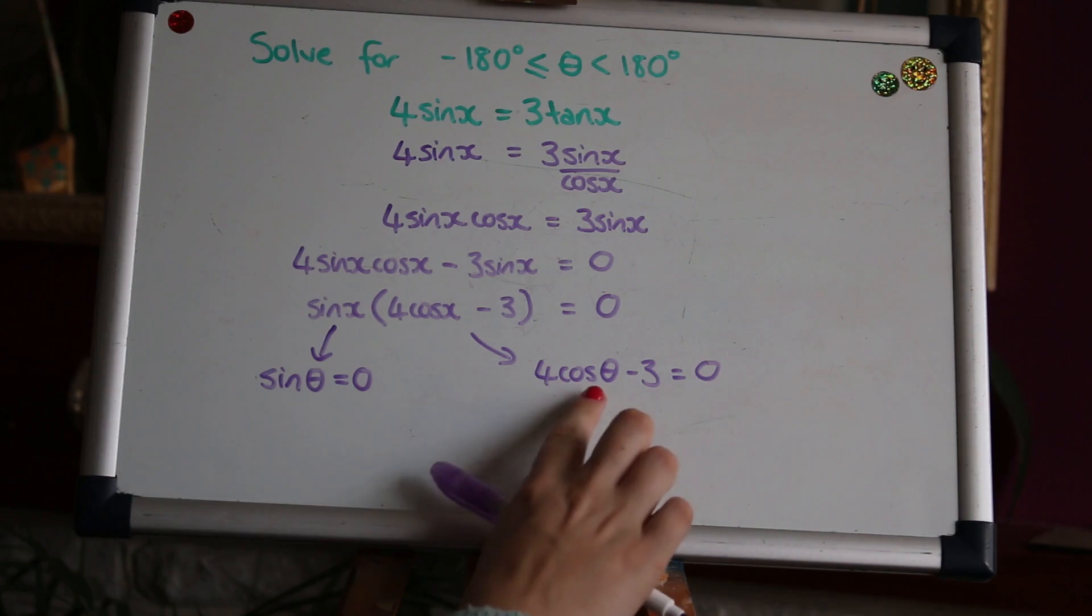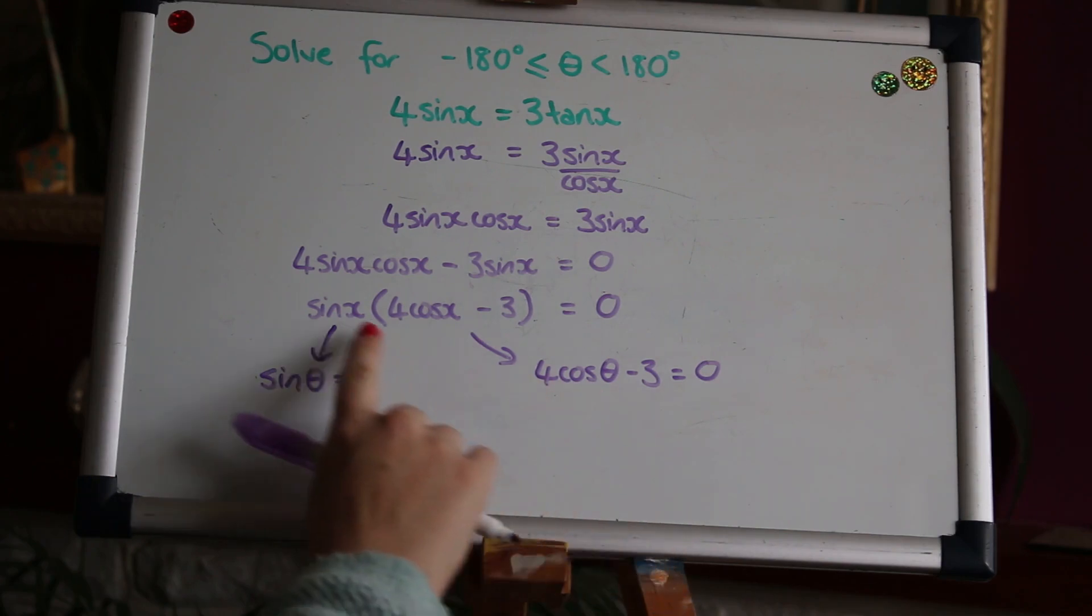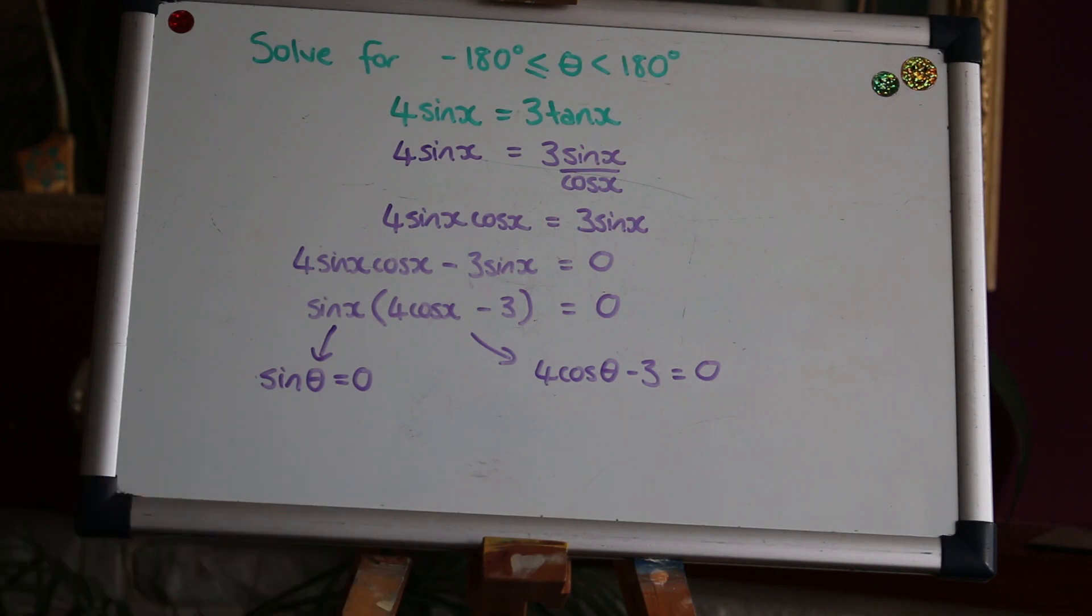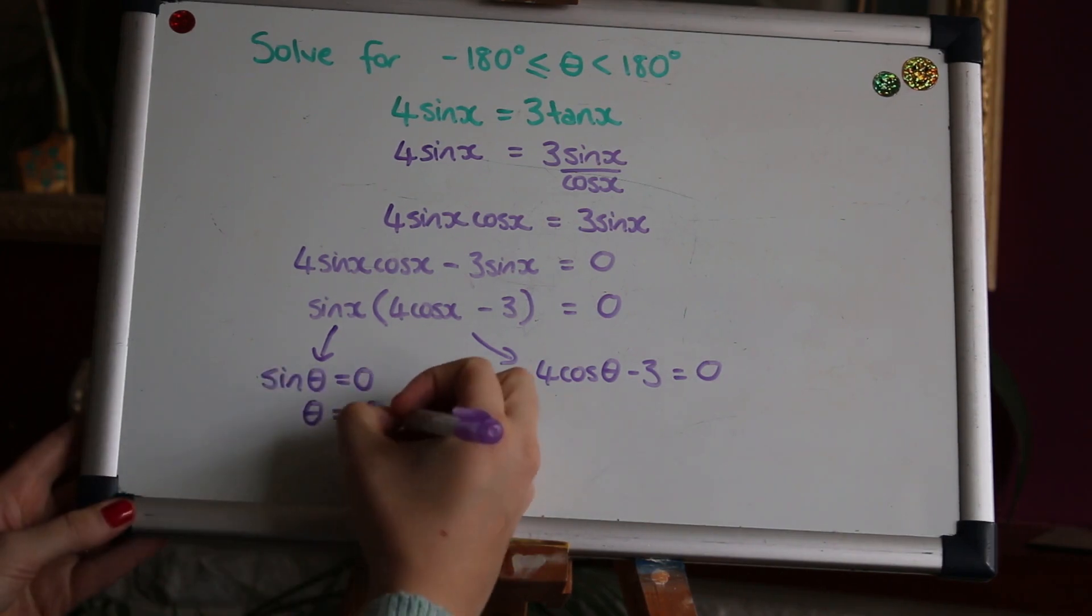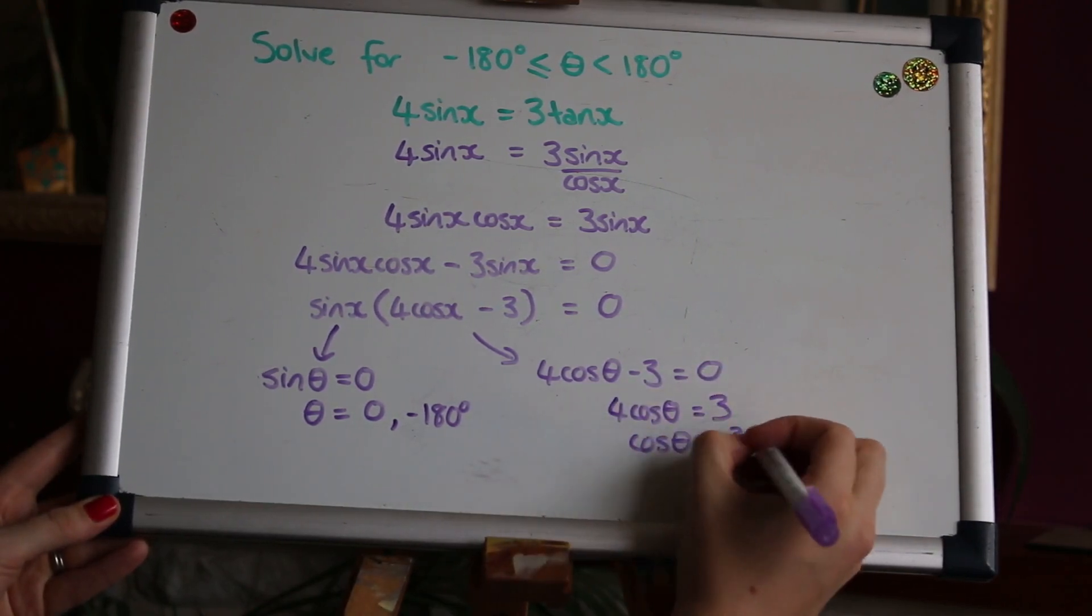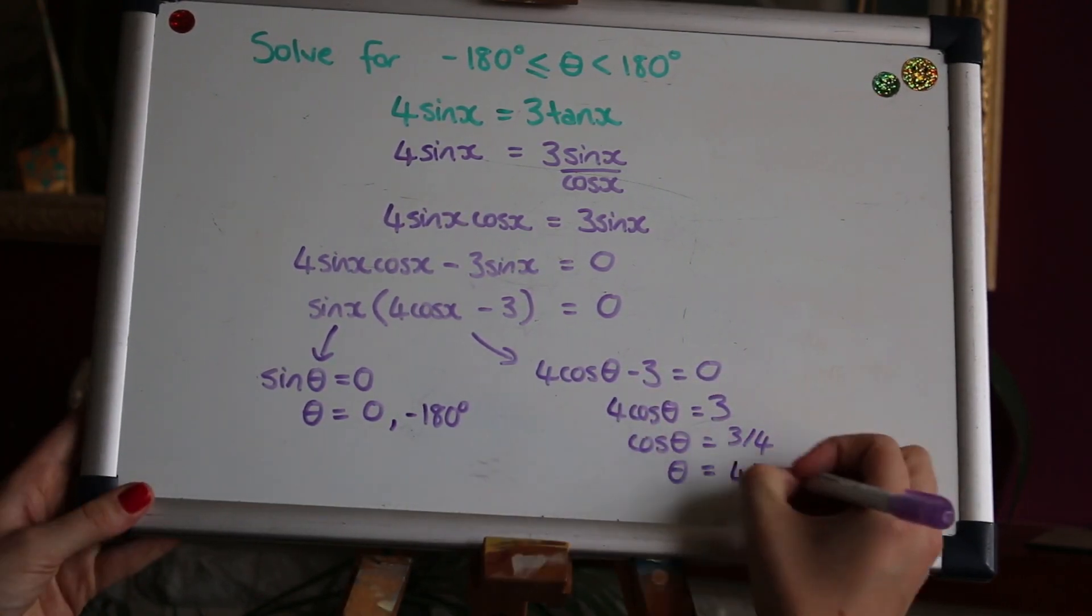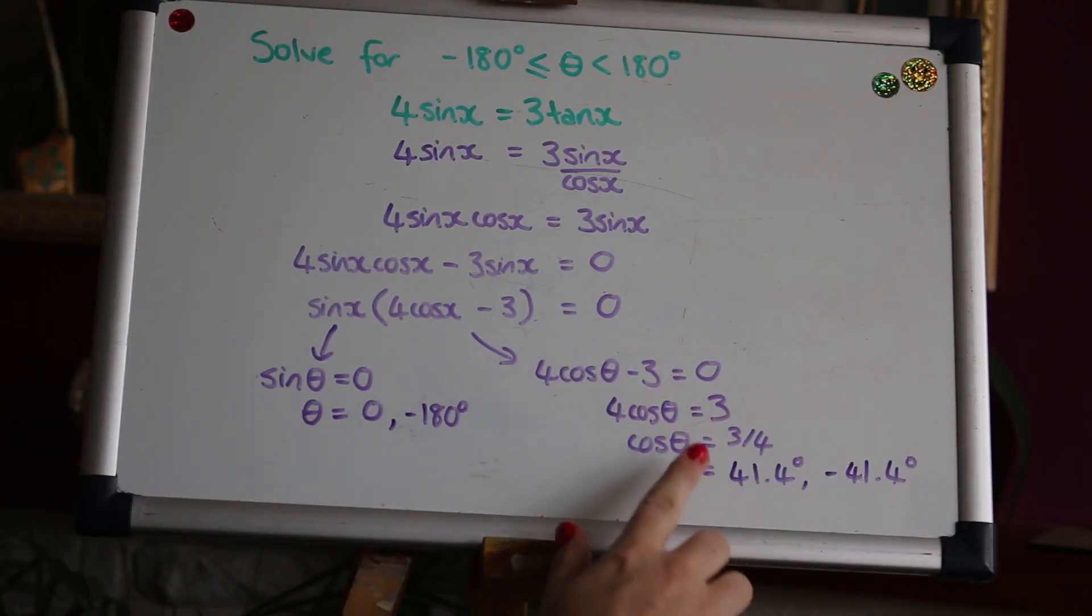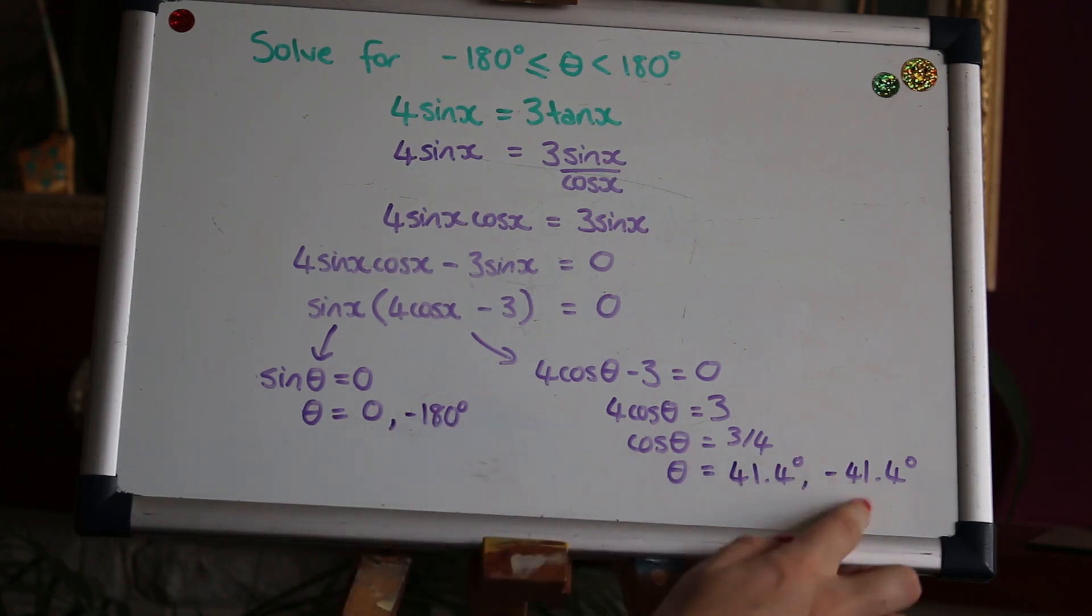Okay, now we've got two different courses of solutions from either that being zero or this term being zero and we can solve them separately. Here I rearranged and got the first answer using the calculator and the second answer either by using Kass diagram or the cos graph. So in total for this question we've got four different solutions.